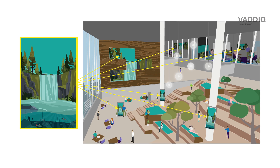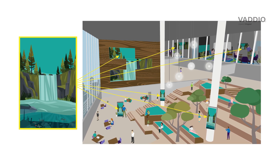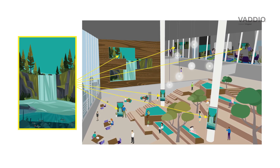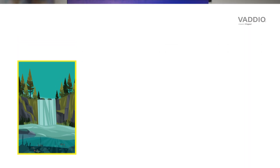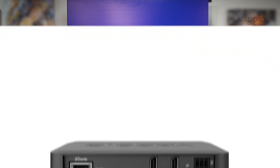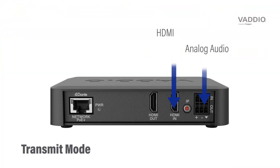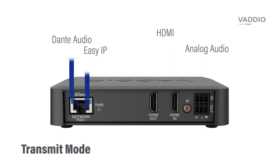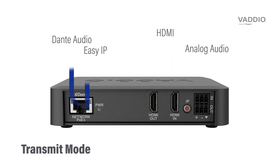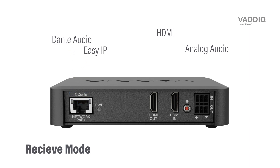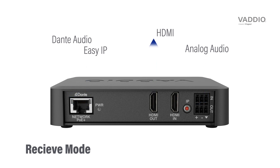This two-in-one device can be set up in either transmit or receive mode, giving you the flexibility to choose what you need at the time of installation. In transmit mode, it takes HDMI and analog audio inputs and converts them into EasyIP and Dante streams, making it easy to distribute across the network. Configure it to receive mode and it works the other way around, taking EasyIP and Dante signals and delivering them as HDMI and analog audio outputs right where you need them.